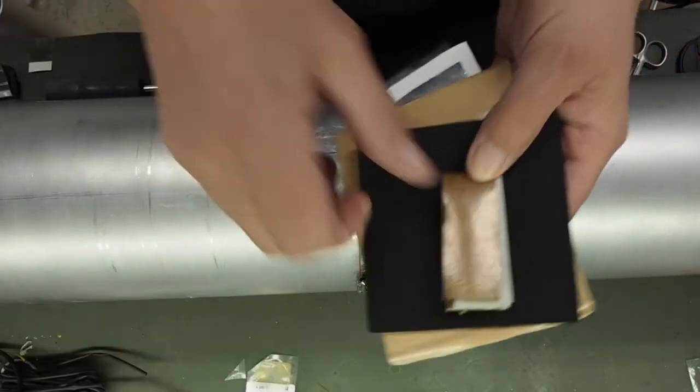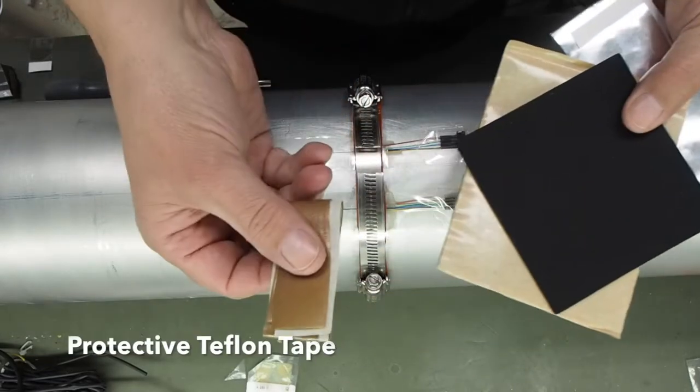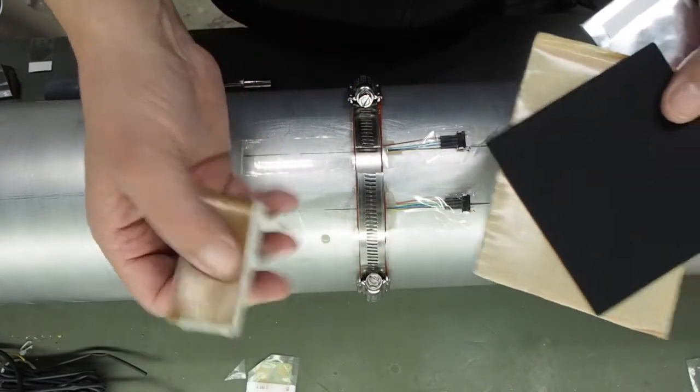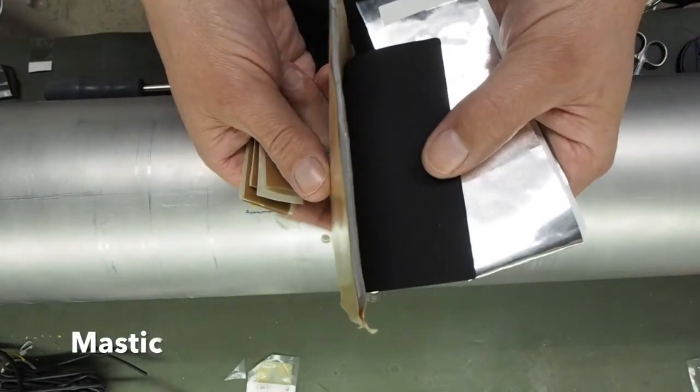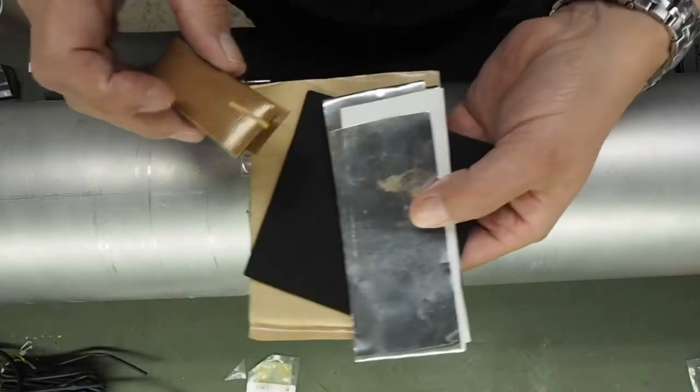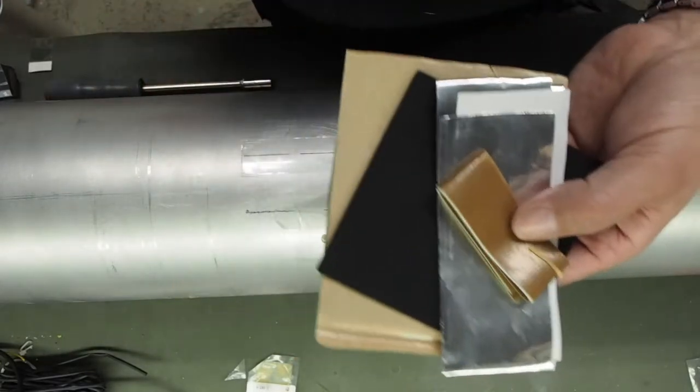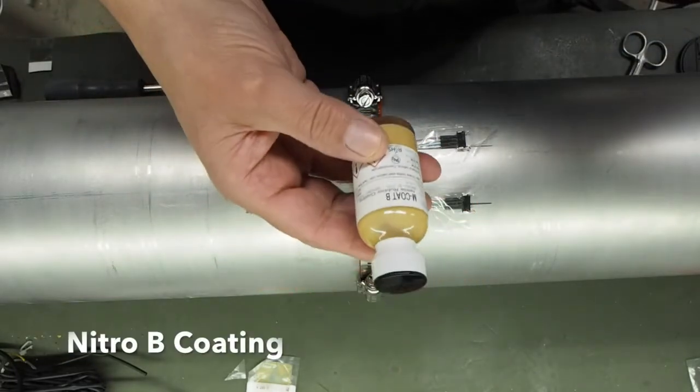We're going to be using the rest of the parts in your kit. There's some protective teflon tape, some mastic, some rubber, some aluminum tape, and we also have nitrile B coating as well.